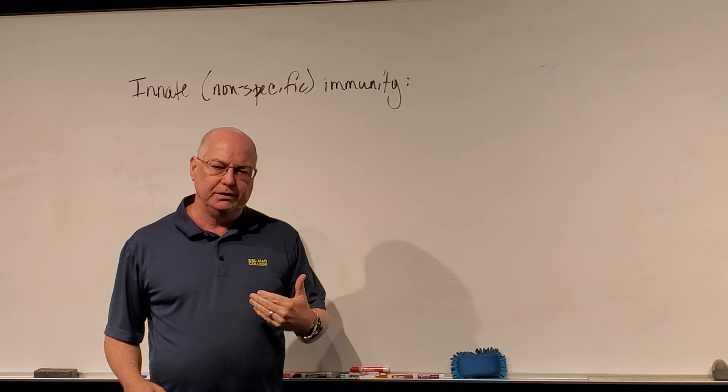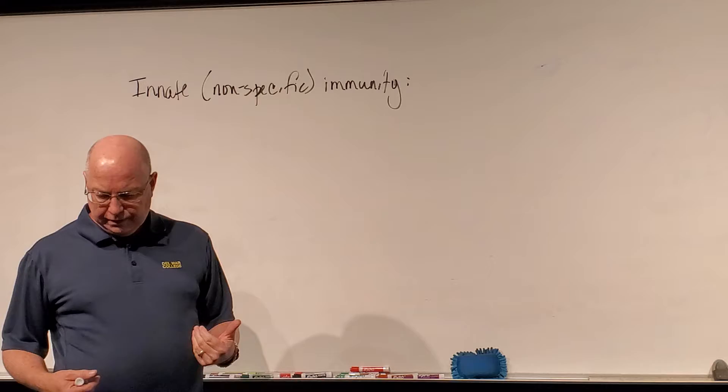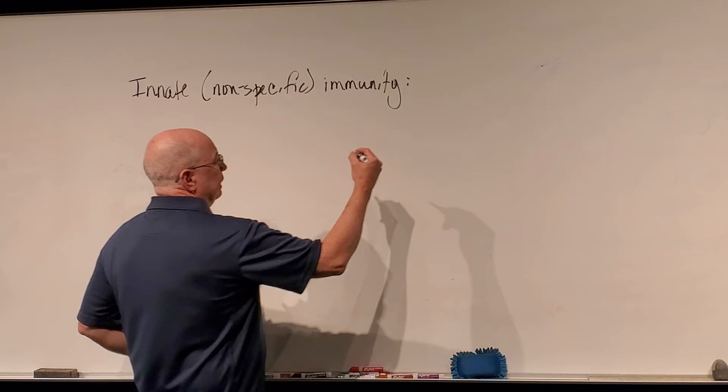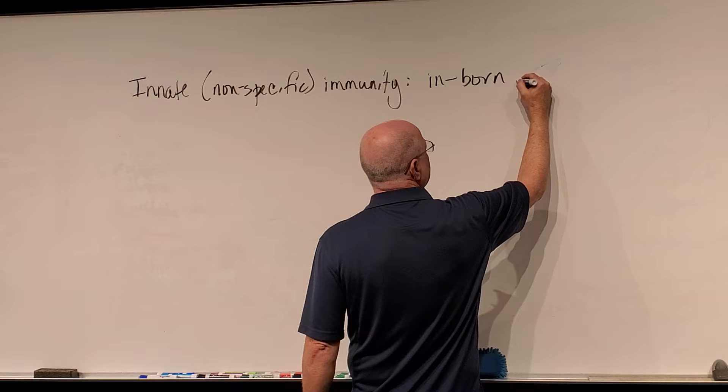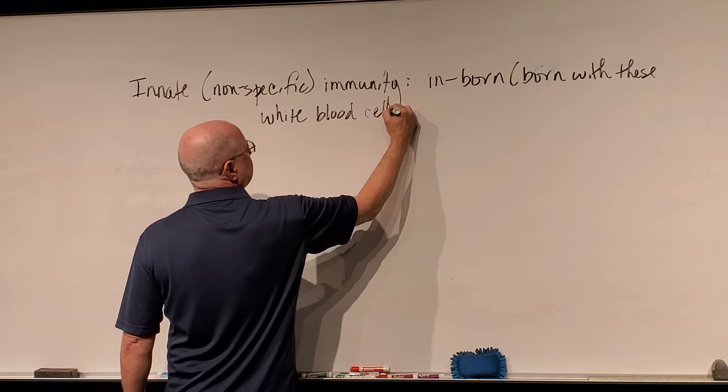There are certain categories of white blood cells we'll talk about in a few minutes. One thing to realize is that some of these cells are already in our bloodstream when we're born. That is the exact opposite of what we call acquired immunity. Innate means inborn immunity — you're born with these white blood cells.